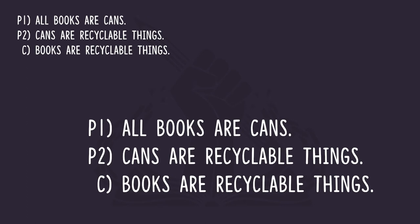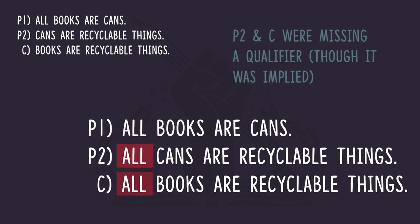Let's take a look at our original argument. The first thing we need to do is reword the major premise and the conclusion. Remember we have to have a quantifier, a subject term, a copula, and a predicate term. The major premise — 'cans are recyclable things' — does not have a quantifier. And the conclusion — 'books are recyclable things' — also does not have a quantifier. These are both mood A statements, so we can say 'all cans are recyclable things,' and for the conclusion 'all books are recyclable things.'